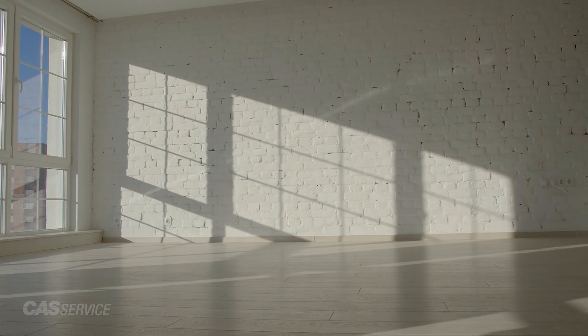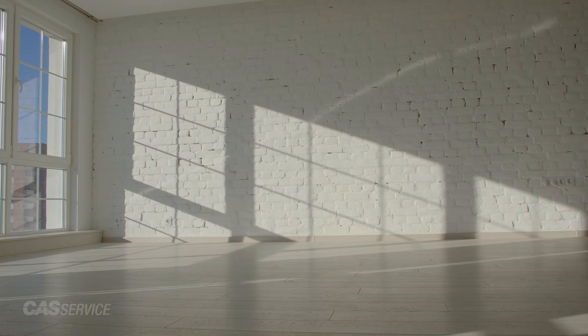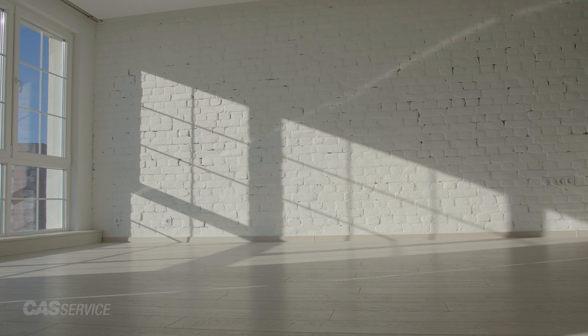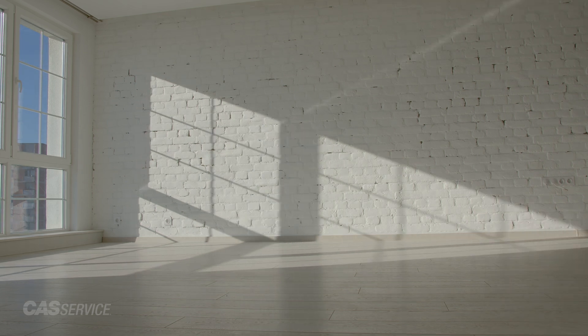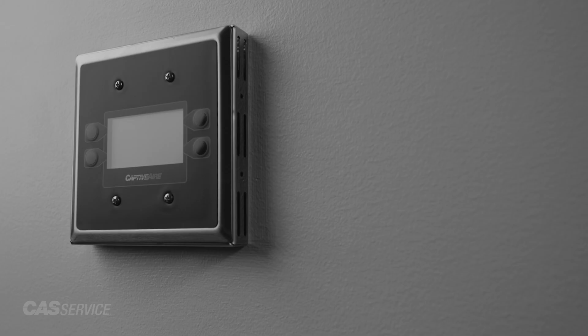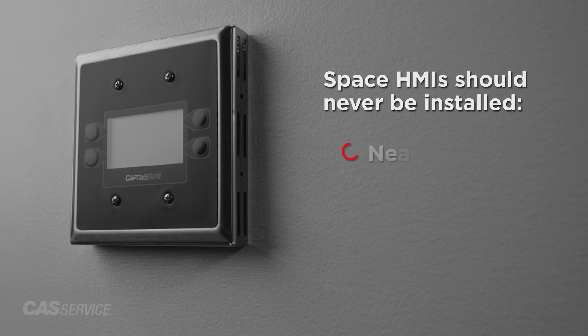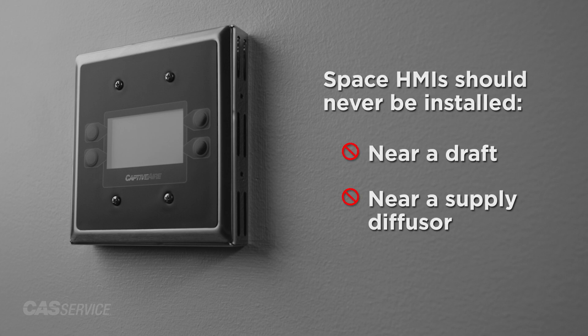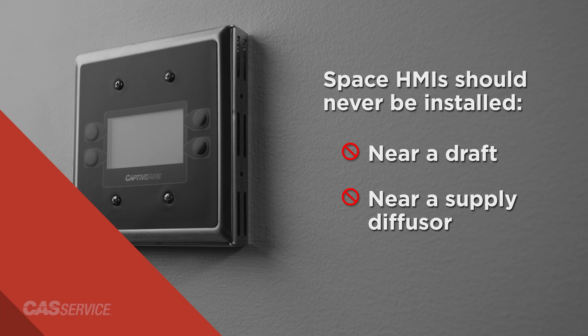We recommend space HMIs are located in a room not impacted by sunlight, while giving the best representation of average space conditions, typically near a return. Space HMIs should never be installed in an area with a draft or near a supply diffuser.